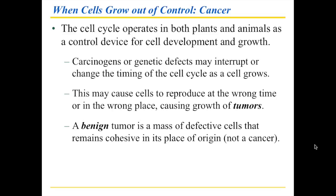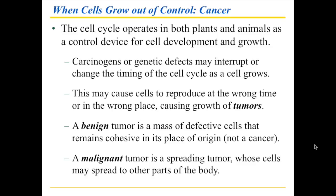A benign tumor is the type of defective cell that remains cohesive in its place of origin. So even though cells are reproducing at the wrong time or place, a benign tumor is not what we would recognize as cancer per se. Cancer is more insidious — in the case of malignant tumors, the cells are spreading to other parts of the body. Cancer tends to originate from a single defective cell, and based on that single cell, a malignant tumor will grow and may send cells to other parts of the body.